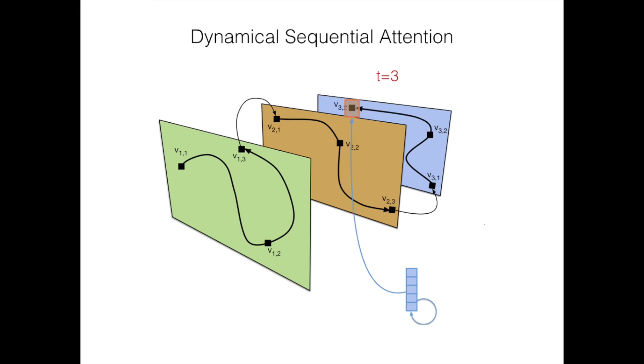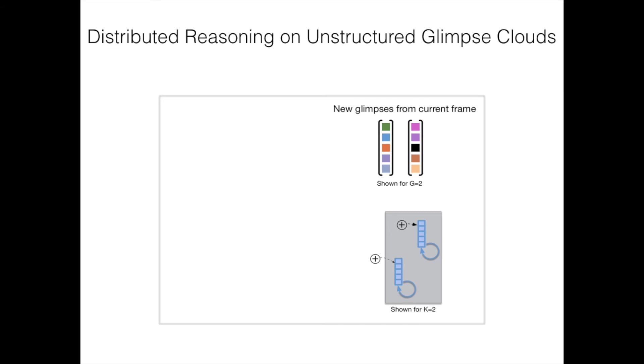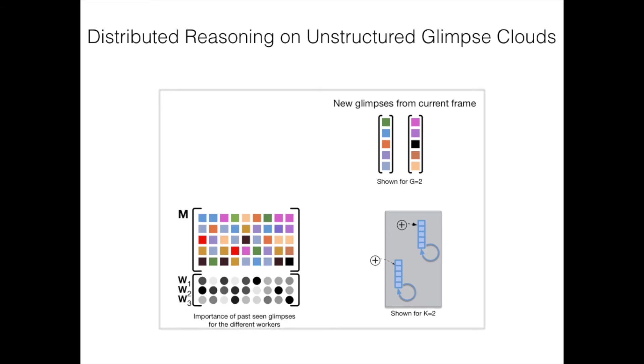This produces an unstructured glimpse cloud. The features extracted from the glimpses are provided to several workers. We learn, rather than fix, a soft assignment between glimpses and workers. Each worker accesses an external memory to select the most relevant glimpses. Access to the external memory is worker-specific and fully differentiable.